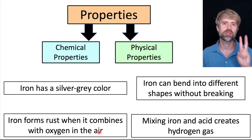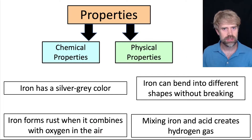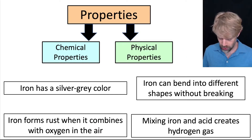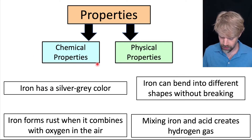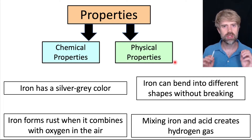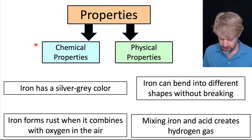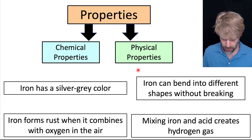Properties can be divided into two categories: chemical properties and physical properties. For the TEAS, you need to look at properties like these and figure out whether they are chemical or physical. So let's talk about these two types of properties and understand the differences between them. We'll start with chemical properties.